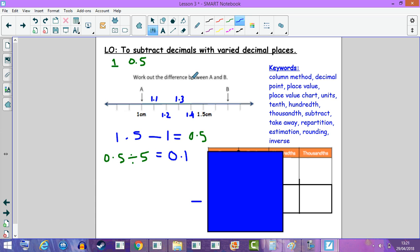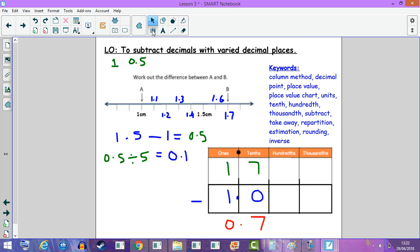So now it's asking us to work out the difference between A and B. We know that A is 1. 1.5 add 0.1 would be 1.6, and B is 1.7. So this means the difference between A and B is 1.7 take away 1 whole, which gives us 0.7. The difference between A and B is 0.7.